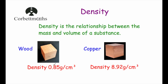The density of wood is 0.85 grams per centimeter cubed, whereas the density of copper is 8.92 grams per centimeter cubed. So if you had one centimeter cube of wood it would have a mass of 0.85 grams, and if you had a centimeter cube of copper it would have a mass of 8.92 grams. That's why two objects of the same volume will have very different masses if one is copper and one is wood.